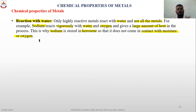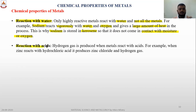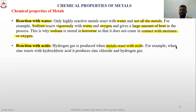The second chemical property is reaction with acids: hydrogen gas is produced when metals react with acid. For example, when zinc reacts with hydrochloric acid, it produces zinc chloride and hydrogen gas.